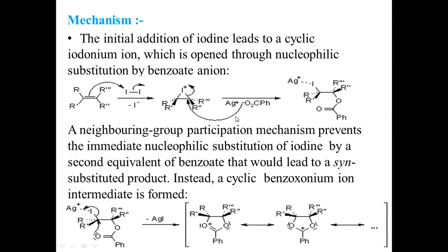The benzoate undergoes a nucleophilic substitution type of reaction. The benzoate comes and attacks onto this carbon, and the carbon–iodine bond gets cleaved and the iodine ion — with positive charge — is removed. The silver salts present in the reaction get coordinated with the iodine. Now another benzoate may act as a nucleophile and displace this iodine from this carbon, cleaving the carbon–iodine bond.